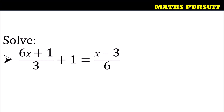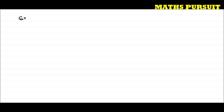The given question is: solve (6x + 1)/3 + 1 = (x − 3)/6. Let us see how we can solve this type of equation.